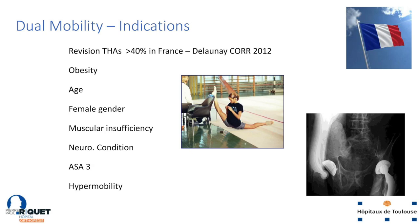In France, the first publication about dual mobility is from 1973. But we haven't been able to publish too much high-level evidence. Today in France, more than 40% of revisions are made with dual mobility. It's difficult to advocate for large use of it, and I know it's not very popular in Germany. But maybe we can choose the patients at risk: obesity, large obesity, age, female gender, muscle insufficiency, neurological problems, and hypermobility patients.